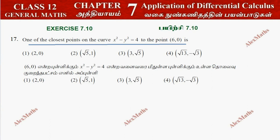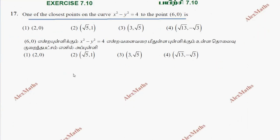So this is a hyperbola curve. This is the point (x,y) on the curve. This point is (6,0). So we need to find the closest point.